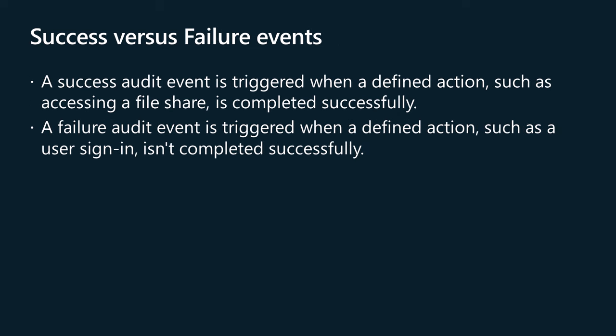A success audit event is triggered when a defined action, such as accessing a file share, is completed successfully. A failure audit event is triggered when a defined action, such as a user sign-in, isn't completed successfully. The appearance of failure audit events in the event log doesn't necessarily mean that something is wrong with your system. For example, if you configure audit logon events, a failure event may mean that a user mistyped the password.